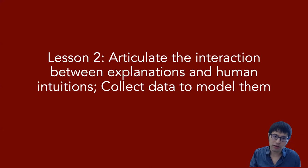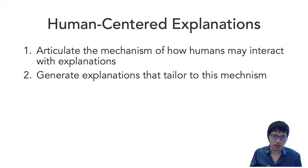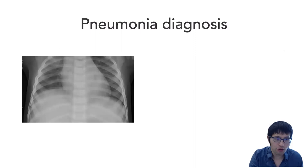Let's look at lesson two, which builds on the first lesson. Knowing that human intuition is important, I think a general recipe for building human-centered explanations is to articulate the interaction between explanations and human intuition and then collect data and models. To rephrase with slightly different wording, the first step is to articulate the mechanism of how humans may interpret explanations. What do you expect humans to do with the explanations you generate? What knowledge they need to bring in so that they can make sense of explanations, maybe to override the machine prediction or identify a bug or figure out a step to improve the model.